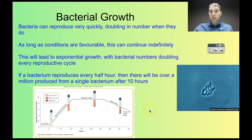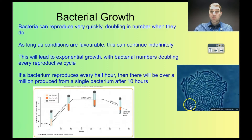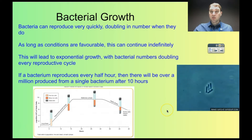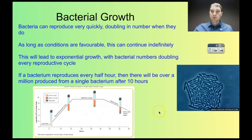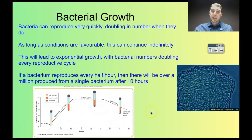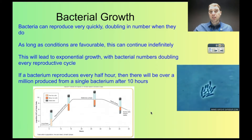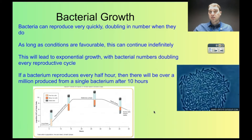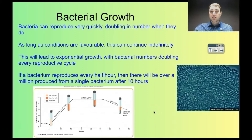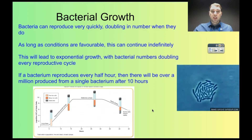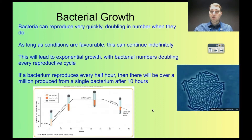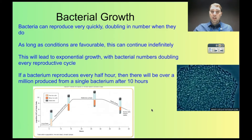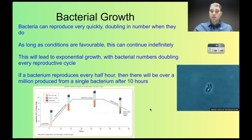So let's have a look at what that means. Over here we have a picture of some E. coli bacteria reproducing really quickly — this is being sped up, obviously. E. coli can reproduce about every half an hour. So if the conditions are favourable — there's enough food, the temperature is right, pH is good, and so on — they can reproduce indefinitely.